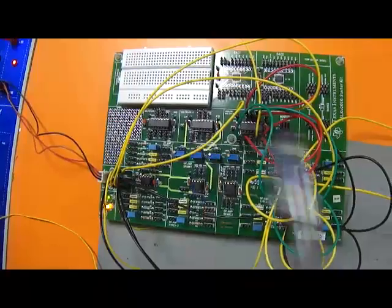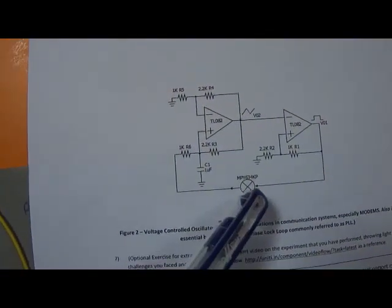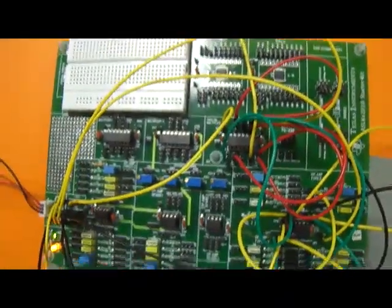is implemented as shown in the following circuit. So this is MPY634KP. It is capable of many things. Now we are using this IC as a multiplier.